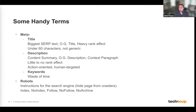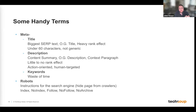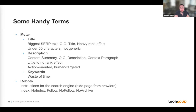Meta descriptions sometimes also duplicate as open graph descriptions or titles. Open graph is similar meta information but for social media — it controls the title and text that appear when you share a link on Facebook or LinkedIn. Meta keywords have since been phased out and are considered a waste of time. Setting a keyword won't affect your ranking. Really focus on the meta title and meta description.